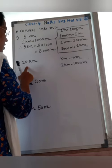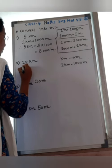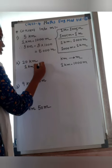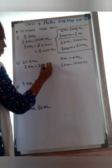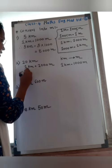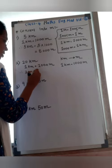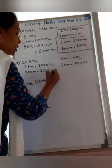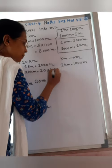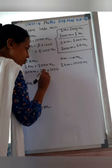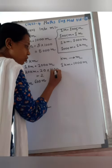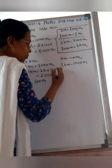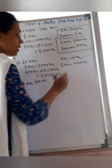Second question: 20 kilometer. Again, write the formula: 1 kilometer equals 1,000 meter. So, 20 kilometer equals 20 multiplied by 1,000. 2 ones are 2, then count the zeros: there are 4 zeros — answer is 20,000 meter.